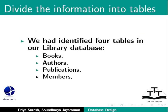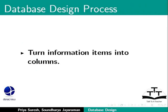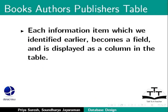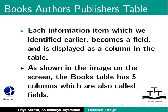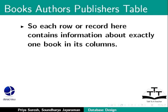Let us now go to the next step, which is turning the information items into columns. Here, we will decide which information item we want to store in each table. Each information item which we identified earlier becomes a field and is displayed as a column in the table. As shown in the image on the screen, the books table has five columns, which are also called fields. Each row or record here contains information about exactly one book in its columns.